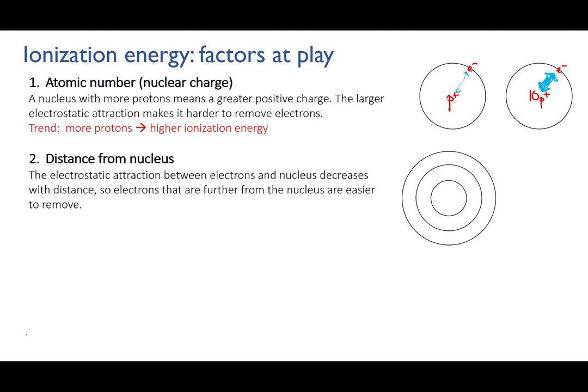Second is the distance from the nucleus. Electrostatic attractions get weaker as the opposite charges move further apart, rather like magnets. The further the electron is from the nucleus, or in other words, the higher the energy level that it's in, the weaker the attraction and the easier it is to remove. So the higher the shell or level that the electron is in, the lower the ionization energy.